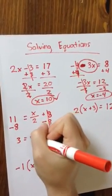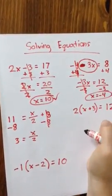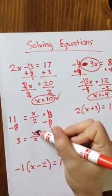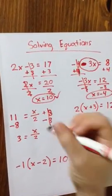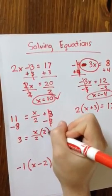So 3 equals x divided by 2. Right now x is being divided by 2, so to undo that I need to multiply by 2.